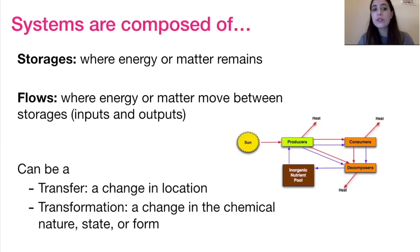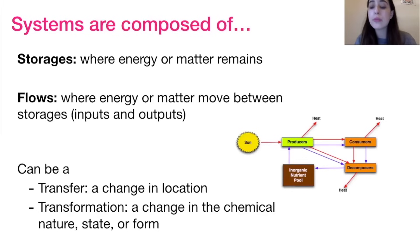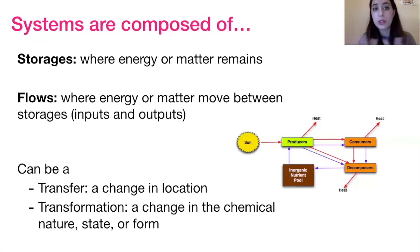So what are systems composed of? First of all, storages — where in the system energy or matter remain when they're not in motion. Flows, on the other hand, are when energy or matter move between storages. As you can see on the diagram, it would be when energy or matter move between the producers and the consumers, from the consumers to the decomposers, etc. These flows can either be a transfer — where there's just a change in location and no other change to the actual form — or a transformation, where either the chemical nature, the state, or the energy form of the energy or matter is changing.